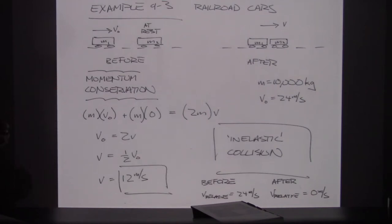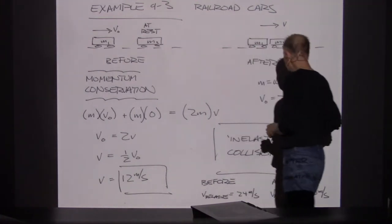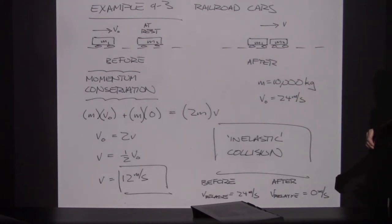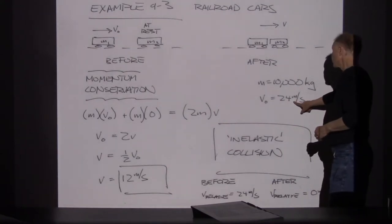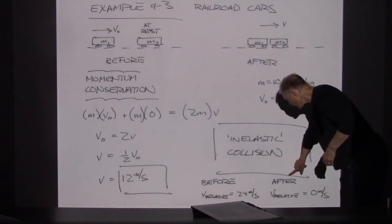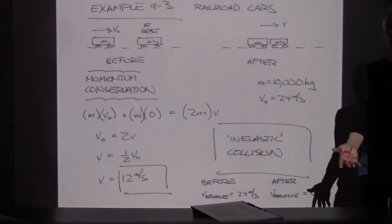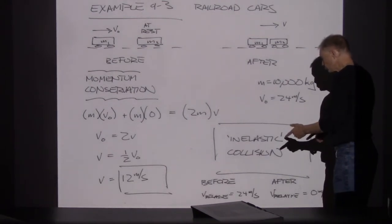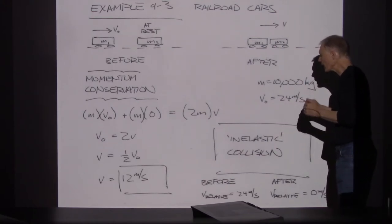We can always tell if a collision is elastic or inelastic by looking at the relative speed. The relative speed between those two railroad cars before the collision was 24 meters per second; after the collision, the relative speed is zero. A perfectly elastic collision would have a relative speed after that matches the relative speed from before — they come together at 24 m/s and separate at 24 m/s. In those cases, kinetic energy is conserved.